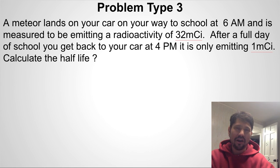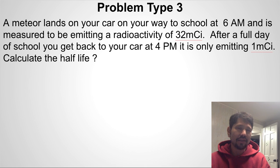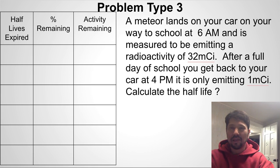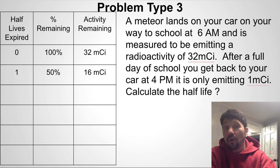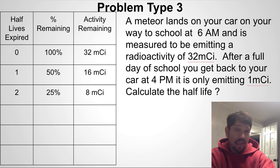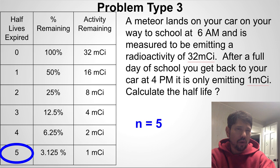Problem type three is getting a little harder. A meteor lands on your car at 6 a.m. and is measured emitting radioactivity at 32 millicuries. After a full day of school, you get back to your car at 4 p.m. and it's only emitting 1 millicurie. Calculate the half-life. Building our table: at 0 half-lives we have 32 millicuries; after 1 half-life, 16; after 2, down to 8; after 3, down to 4; after 4, down to 2; and after a fifth half-life, down to 1 millicurie. So 5 half-lives expired to drop from 32 to 1 millicurie — but that's not the answer, don't stop there.